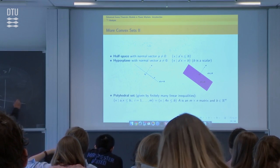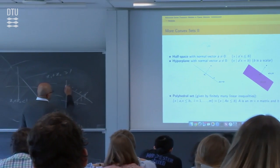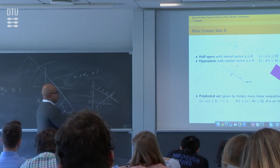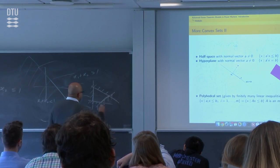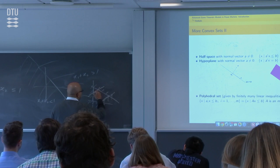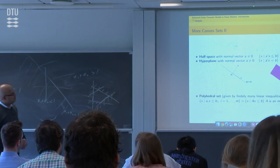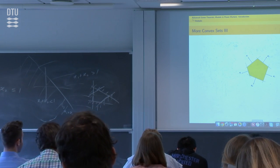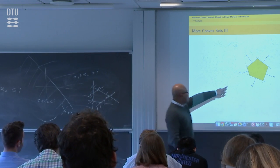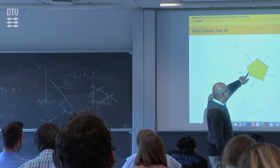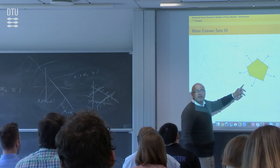A finite number of half-spaces gives what is called a polyhedral set — for example, a polygon where each side corresponds to a half-space: A₅^T x ≤ b₅, A₄^T x ≤ b₄, and so on. You could also add a hyperplane to further constrain the feasible region.